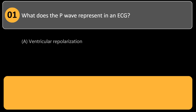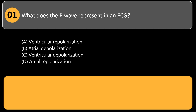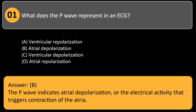What does the P-wave represent in an ECG? A. Ventricular repolarization. B. Atrial depolarization. C. Ventricular depolarization. D. Atrial repolarization. Answer: B. The P-wave indicates atrial depolarization, or the electrical activity that triggers contraction of the atria.